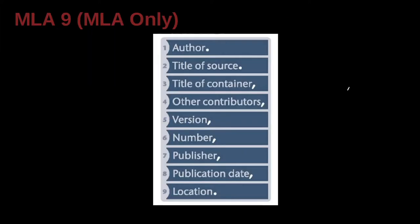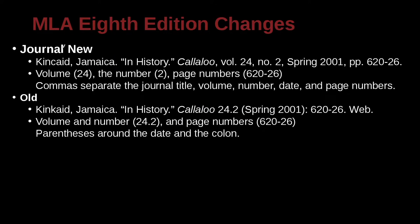Let's take a look at the journal name changes inside the reference list. The new approach is: the author's name, then the article title — which is the smaller piece inside something bigger — and then the container, which in this case is the journal. Then we have volume with 'vol.' and number with 'no.' written out with commas. For example, volume 24, number 2, Spring 2001, pages 620 to 626.